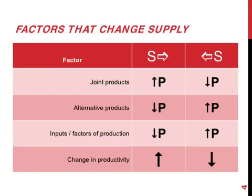Joint products are produced together, like meat and leather. So if the price of meat increases the quantity supplied will increase, but at the same time the joint product — in other words the cow's hides or the leather — will increase as well, and the whole supply curve will move towards the right.